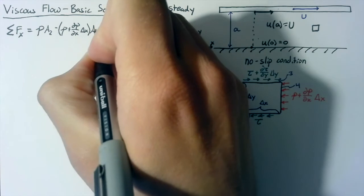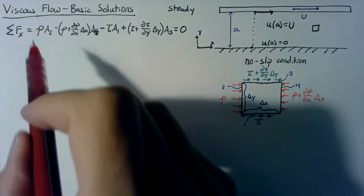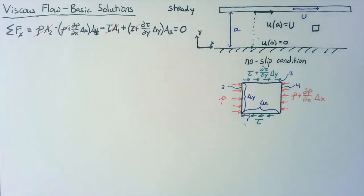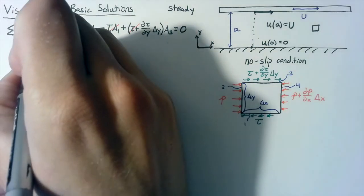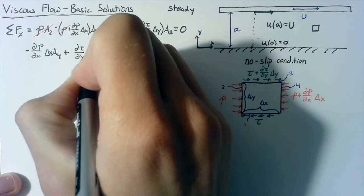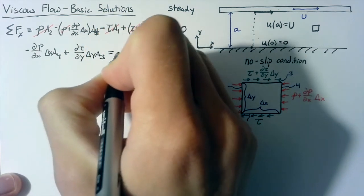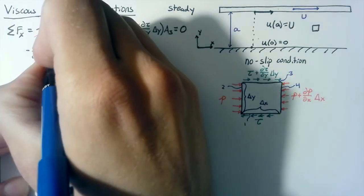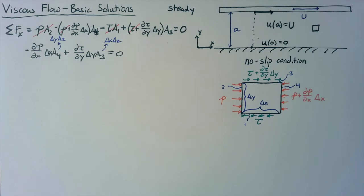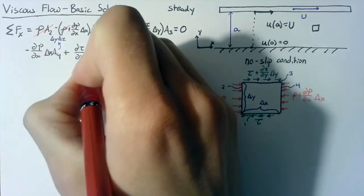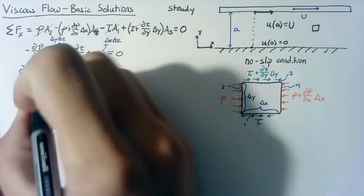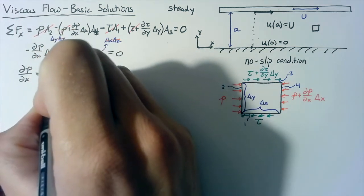I just noticed I wrote the wrong area here. This should be a4. Now we get to cancel out terms. a2 is equal to a4, so we can just cancel out those p's. a1 is equal to a3, so we can cancel out the tau's. And what we end up with from all that is a negative dp dx times delta x a4 plus a positive d tau dy multiplied by delta y a3 is equal to zero. Now a4 is equal to delta y times delta z, and a3 is equal to delta x delta z. So the end result of all that is we can cancel out all of the deltas from our equation. And we end up with a very simple equation. The change in pressure with respect to x is equal to the change in the shear stress with respect to y.